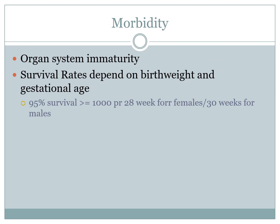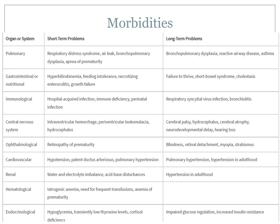Morbidity is primarily brought about by organ system immaturity. Survival rates largely depend on birth weight and gestational age. If birth weight is greater than or equal to 1,000 grams, or gestational age is 28 weeks for females or 30 weeks for males, there is a 95% survival rate. Short-term and long-term problems present across multiple organ systems including pulmonary, gastrointestinal or nutritional, immunological, cerebral nervous system, ophthalmological, cardiovascular, renal, hematological, and endocrine.